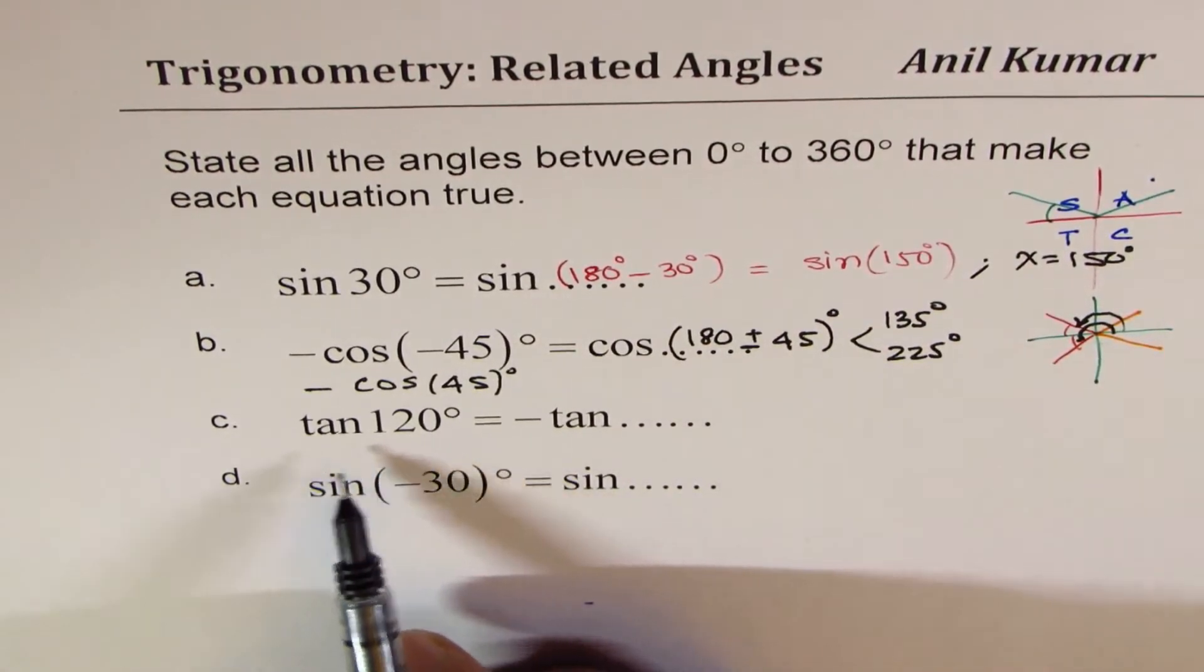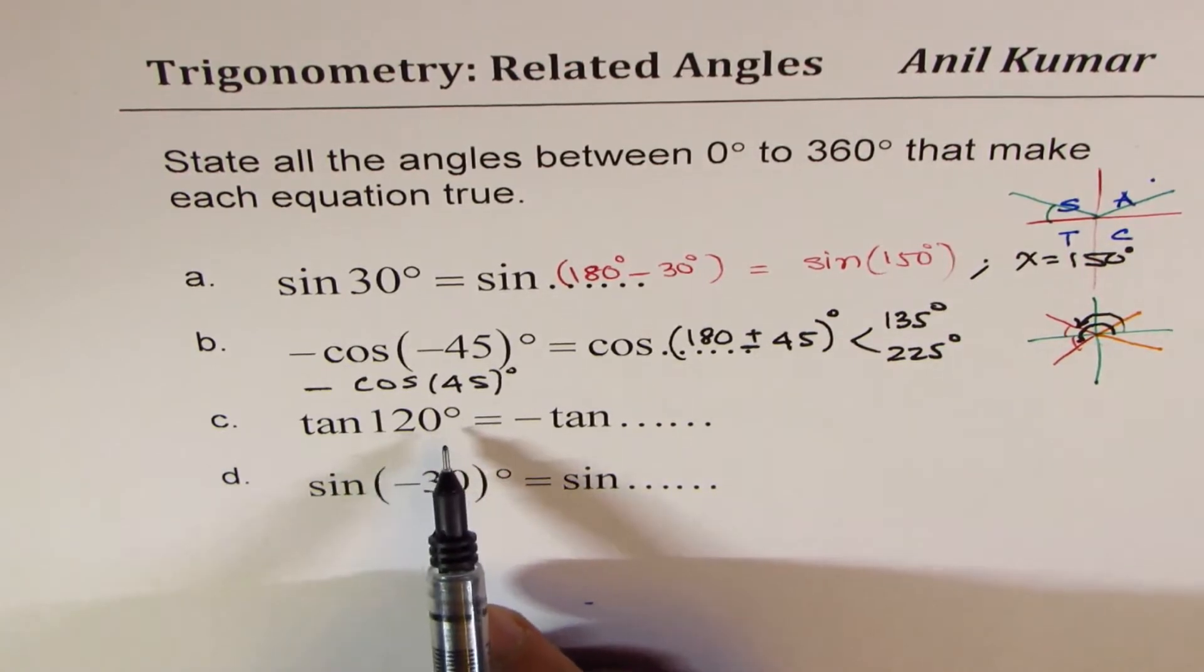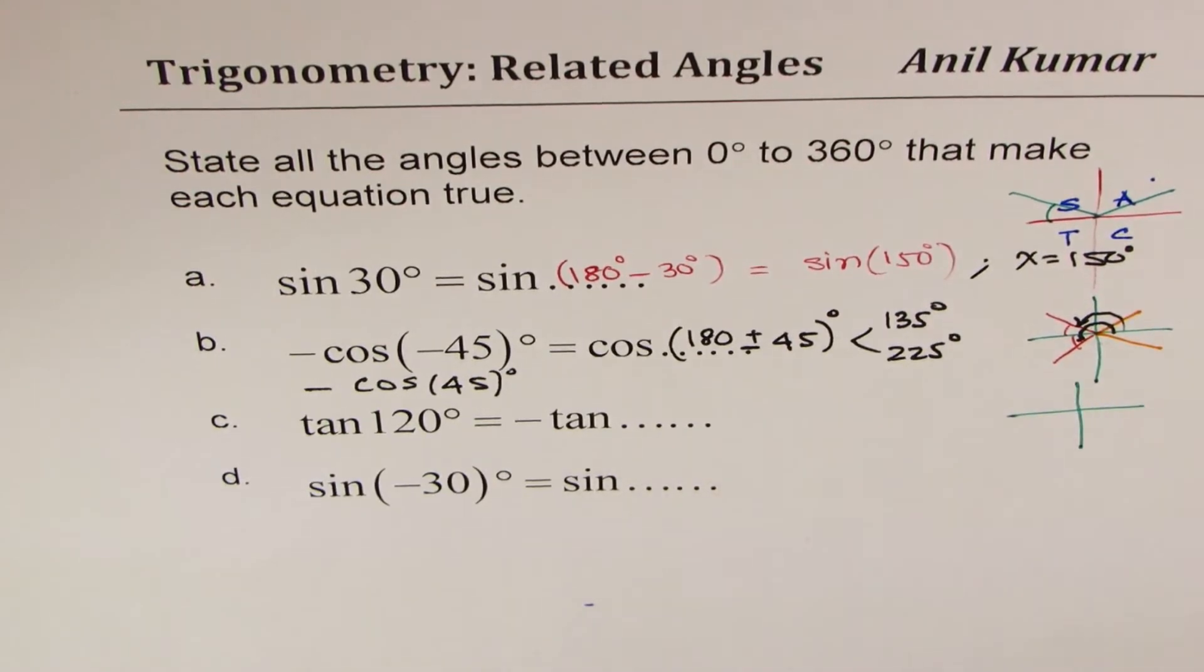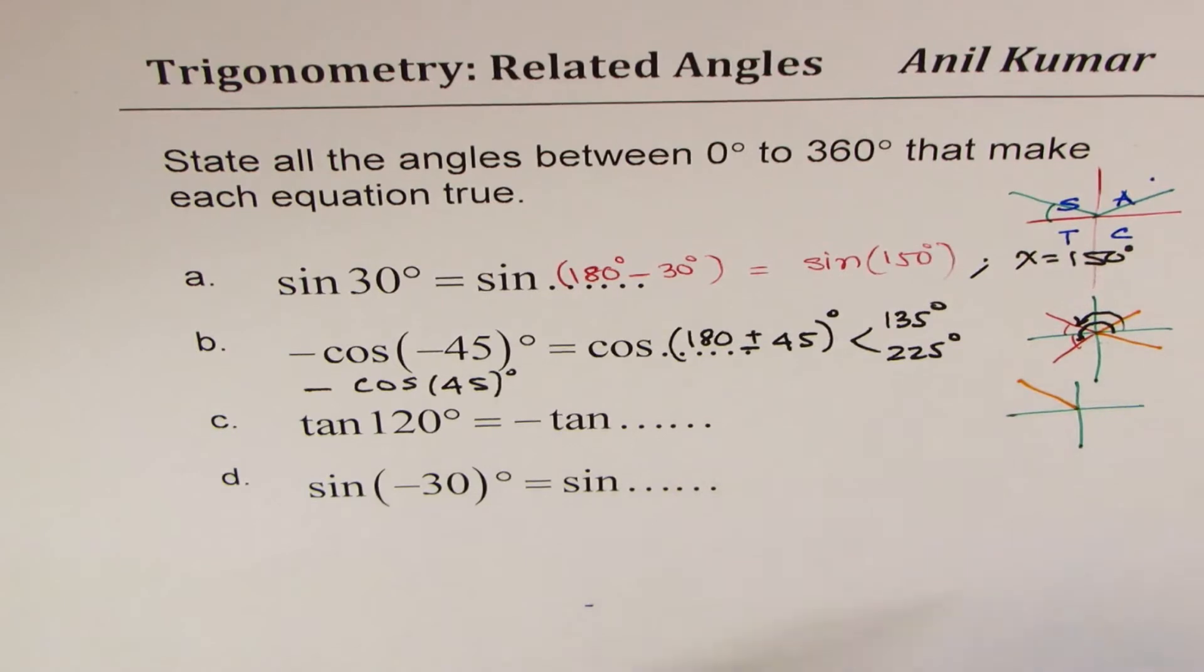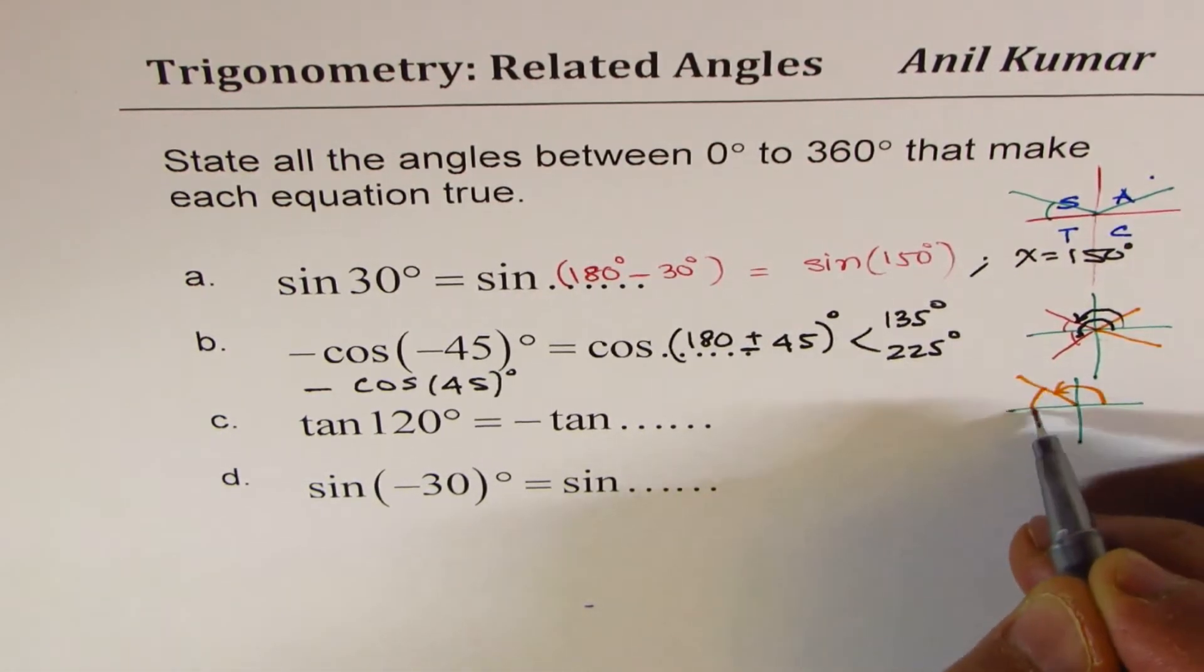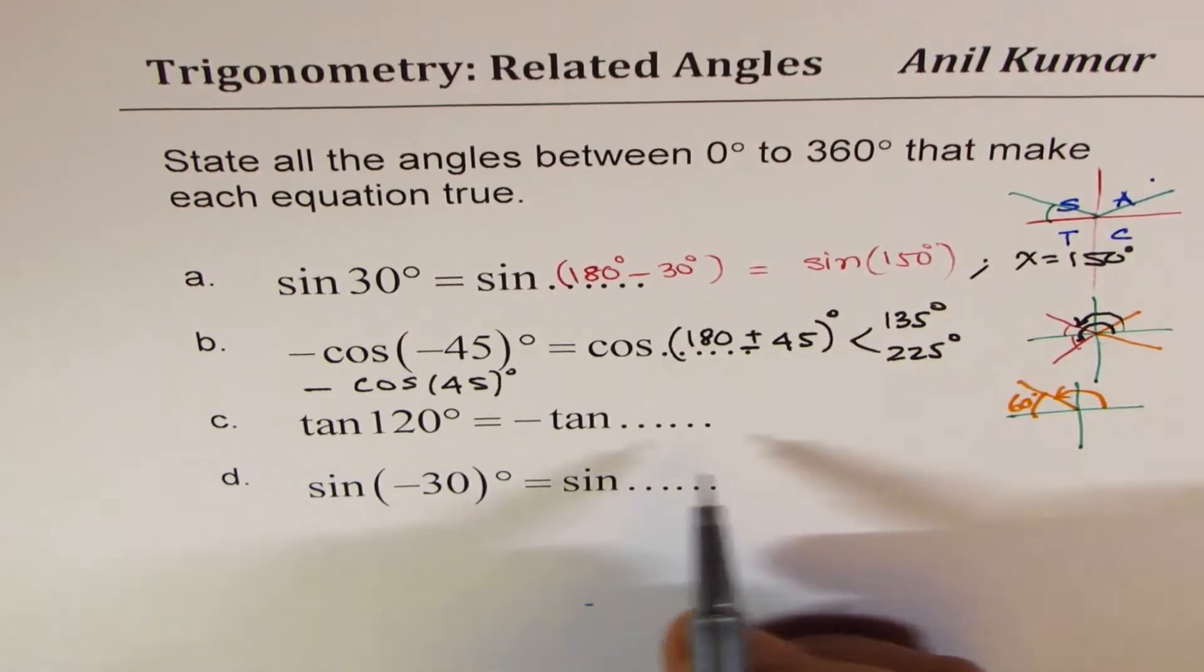Now let's go to question number 3, C, which is tan 120 degrees. Now tan 120 degrees means the principal arm is in quadrant 2. It is in quadrant 2, where that is 120 degrees. So the acute angle is 60 degrees, 180 minus 120.